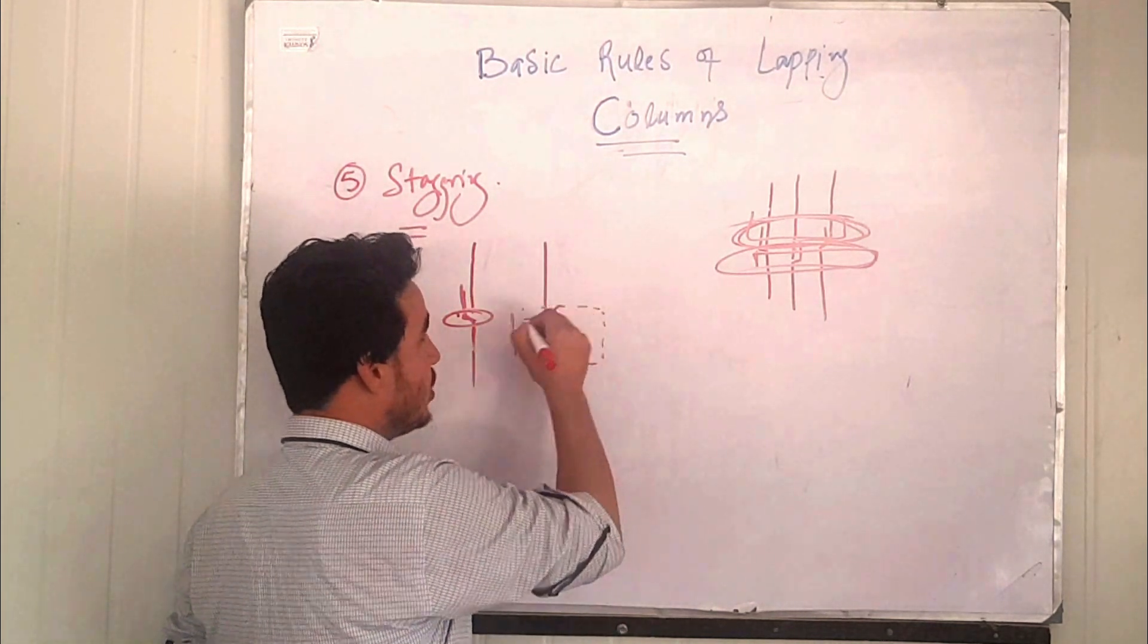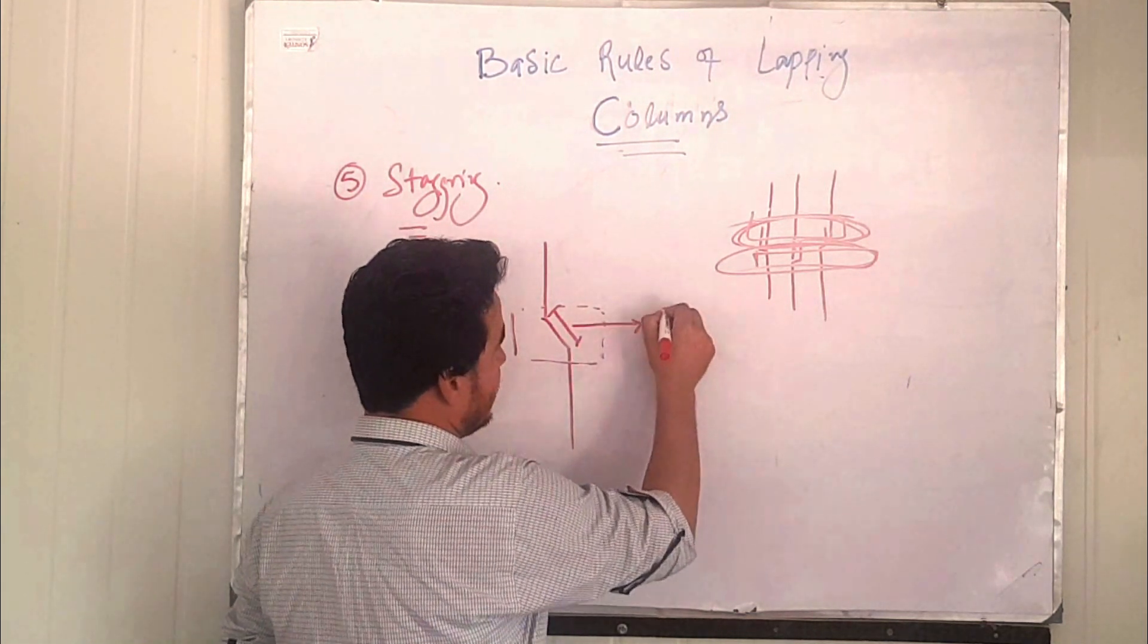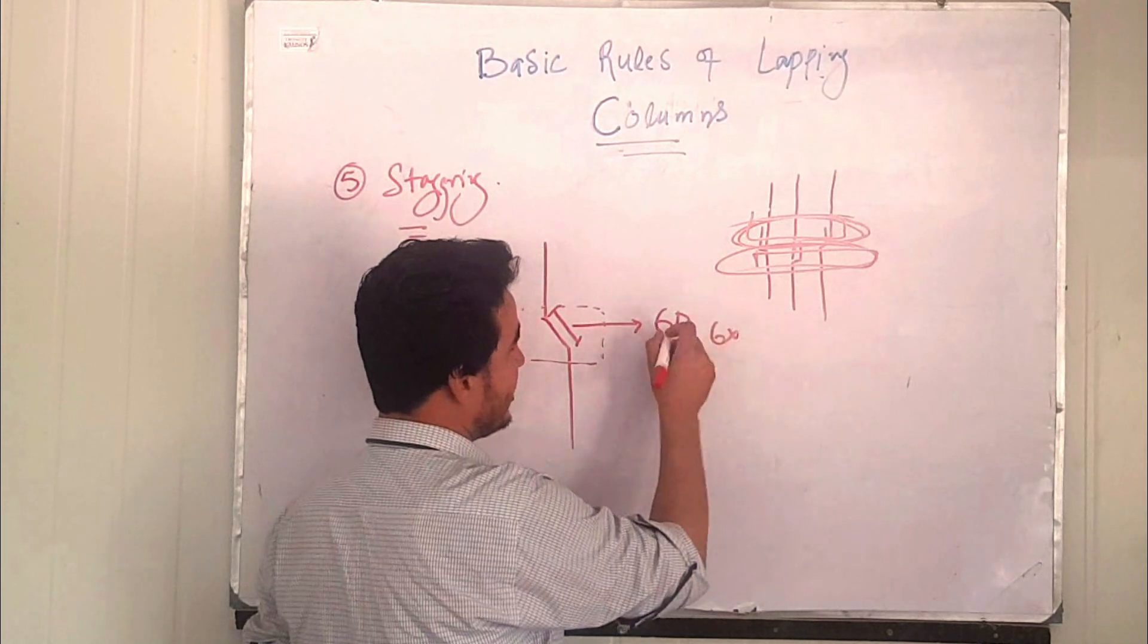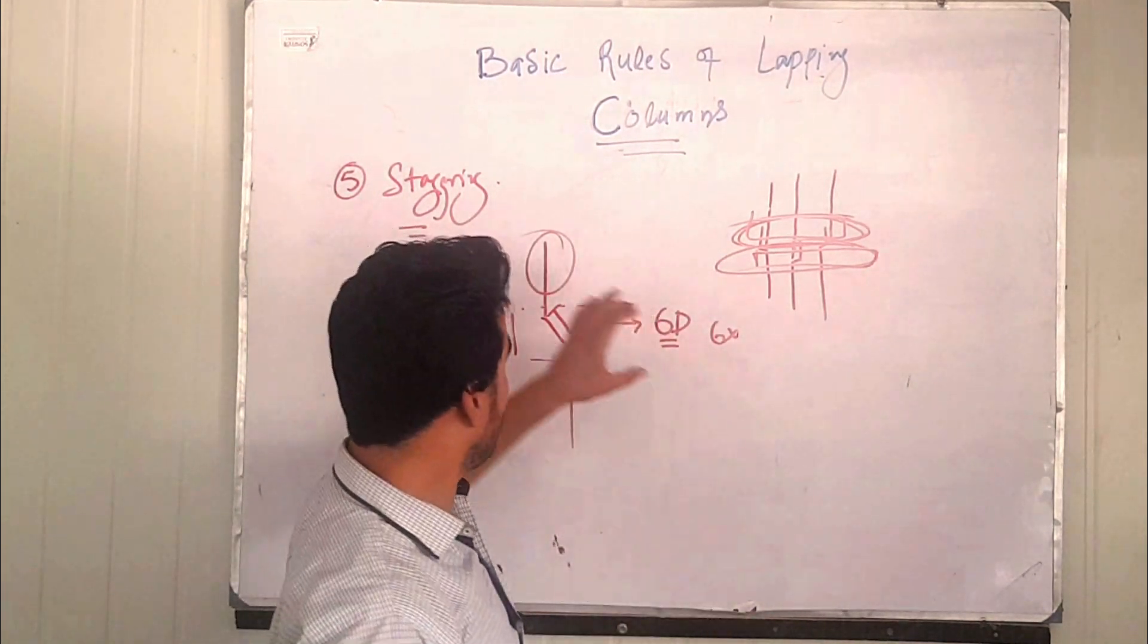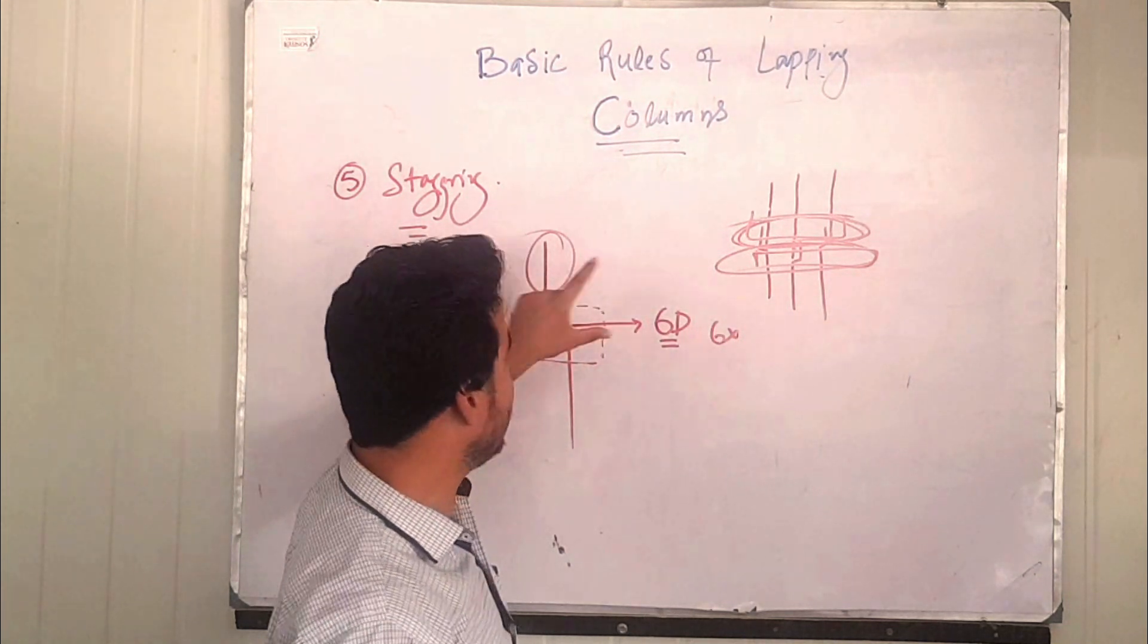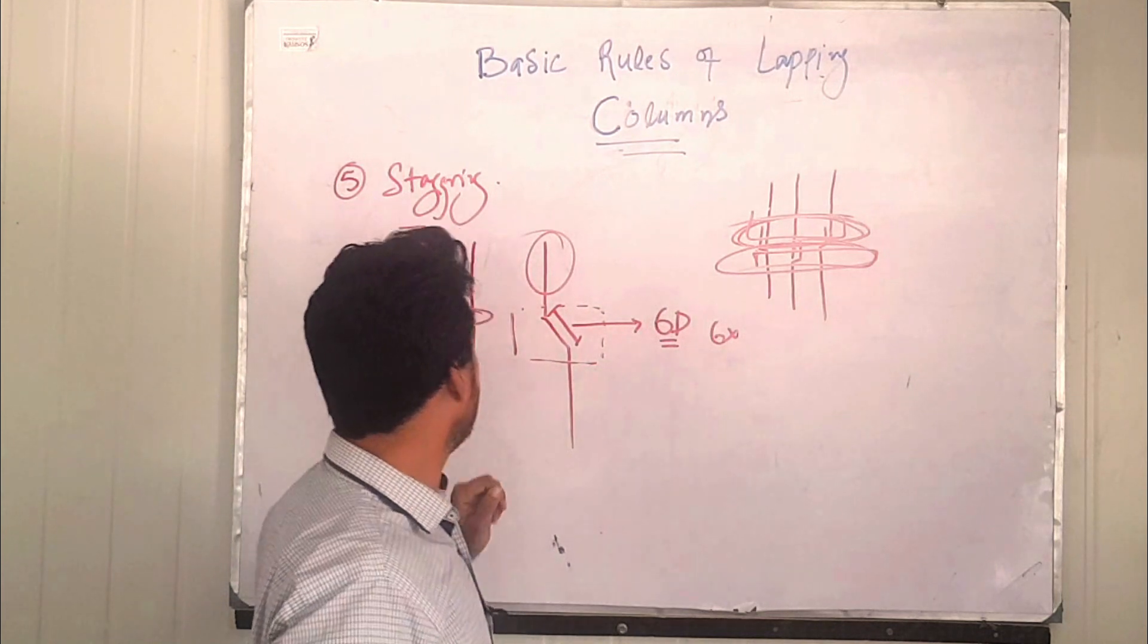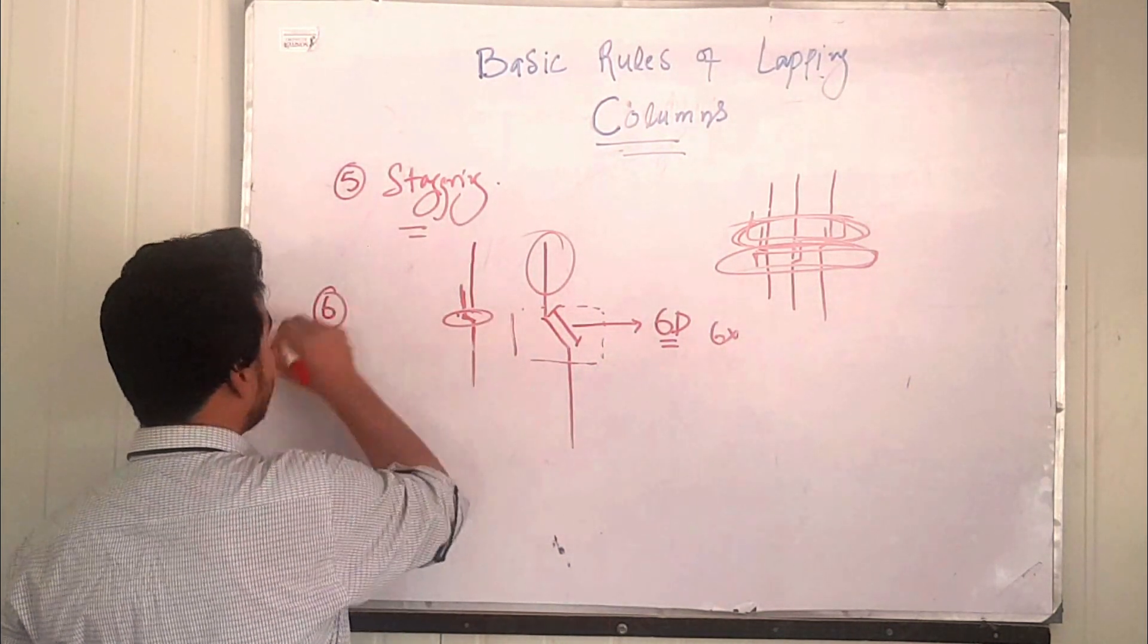The length of this juggle will be 6D, which means 6 multiply by the diameter of this bar. So this juggle is allowed for lapping and its length will be 6 multiply by diameter of this bar. So this was another point, number six: the juggle length.